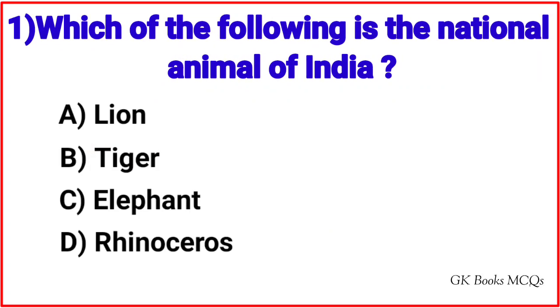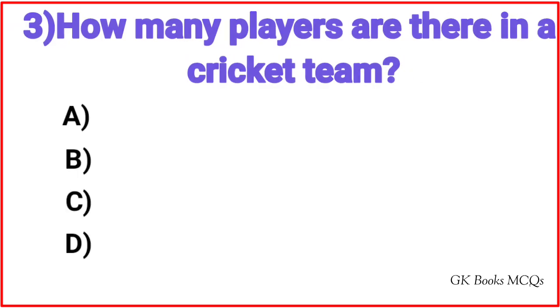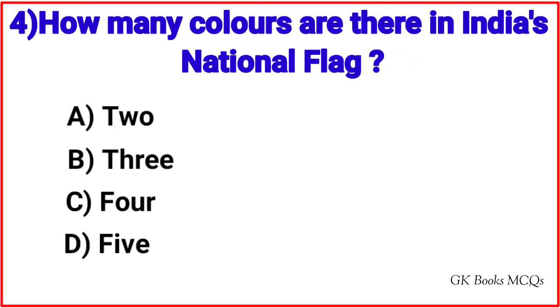Question 1: Which of the following is the national animal of India? Correct answer is option B, Tiger. Question 2: Which of the following organ is used to taste food? Correct answer is option A, Tongue. Question 3: How many players are there in a cricket team? Correct answer is option C, 11.